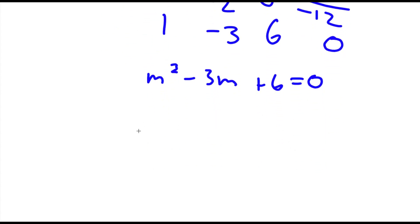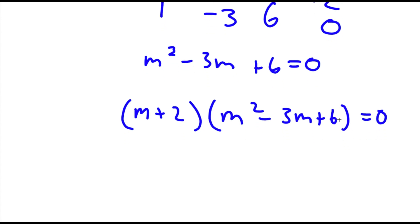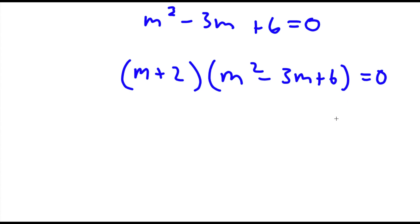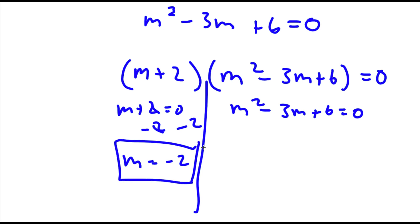So now I have m plus 2 times m squared minus 3m plus 6 is equal to 0. This gives us two equations: m plus 2 equals 0, and m squared minus 3m plus 6 equals 0. We already know m is equal to negative 2 from the first factor — that is one solution.